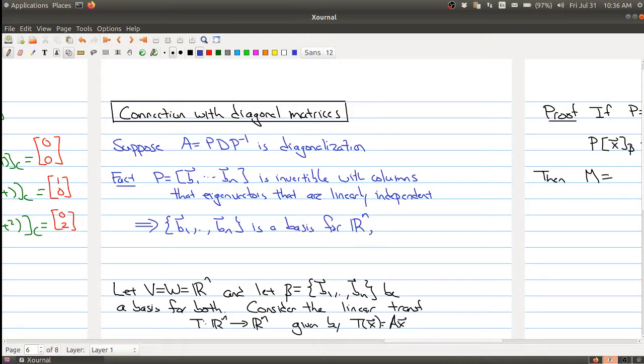And so this is called an eigenvector basis of Rn. We've picked the basis of Rn using eigenvectors from some particular matrix.